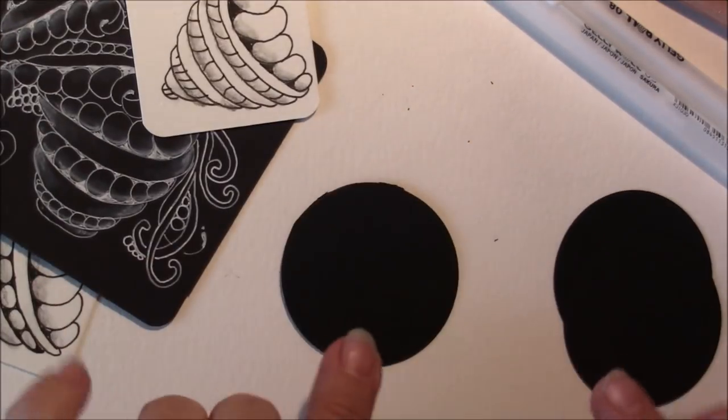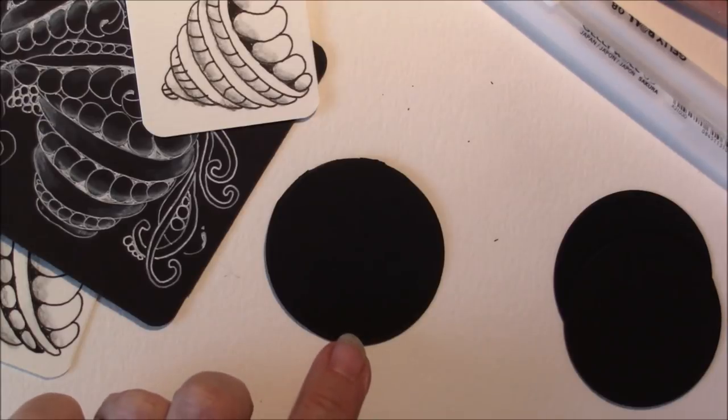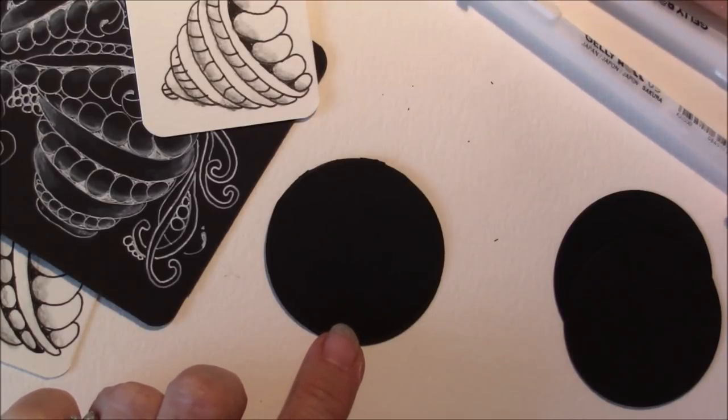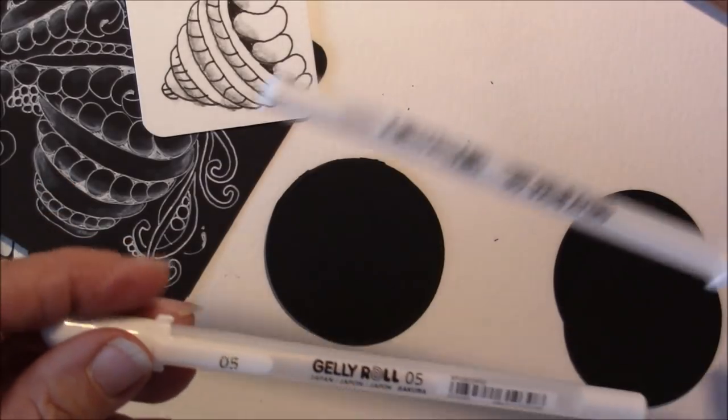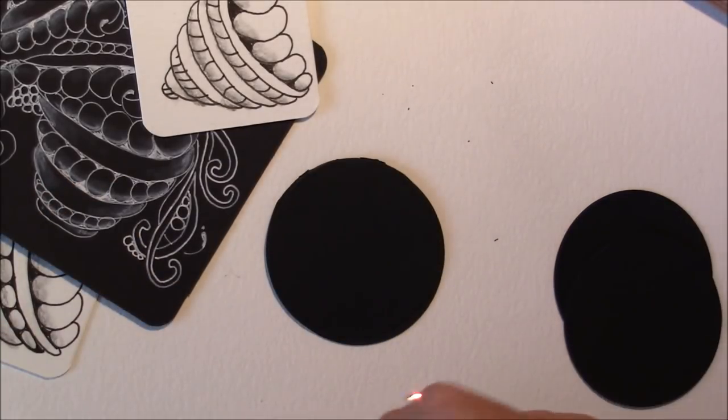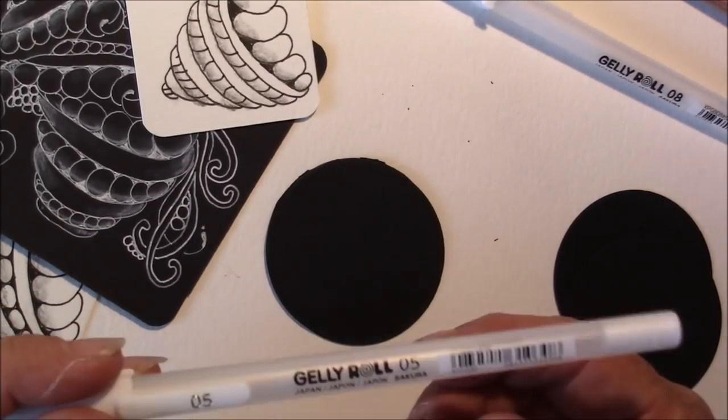I'm just going to show you how it's done, and I'm going to use a little round black tile and a Jelly Roll 05. I have a Jelly Roll 08 and an 05, and I'm going to start with the 05.